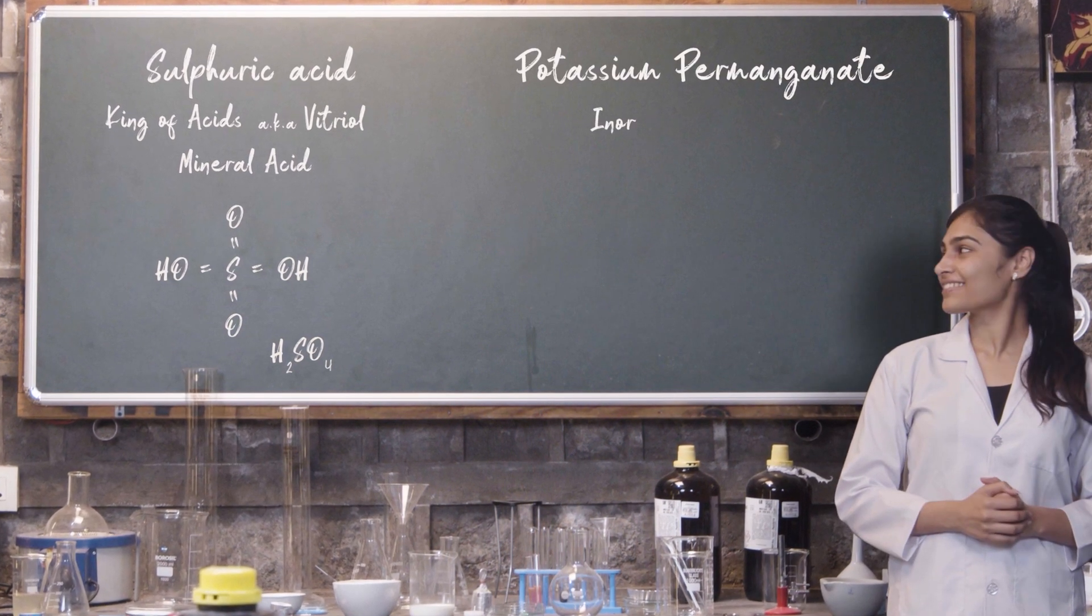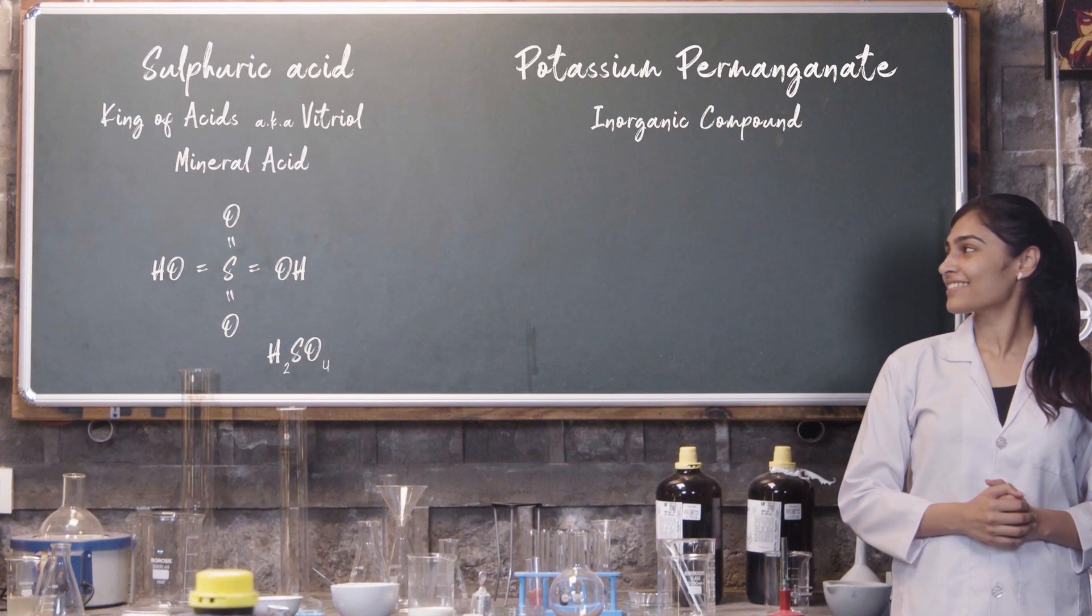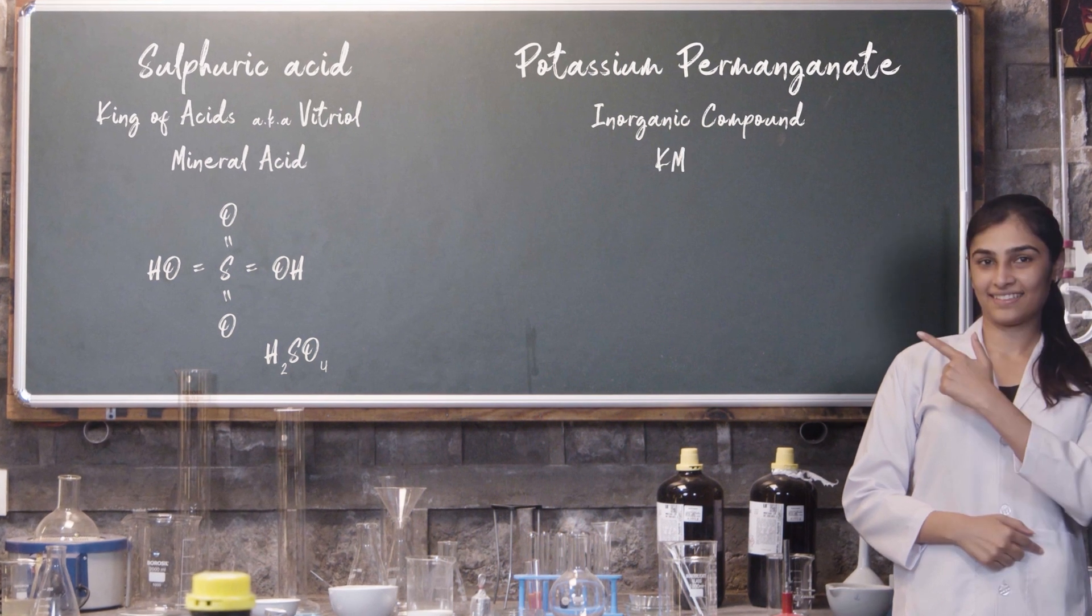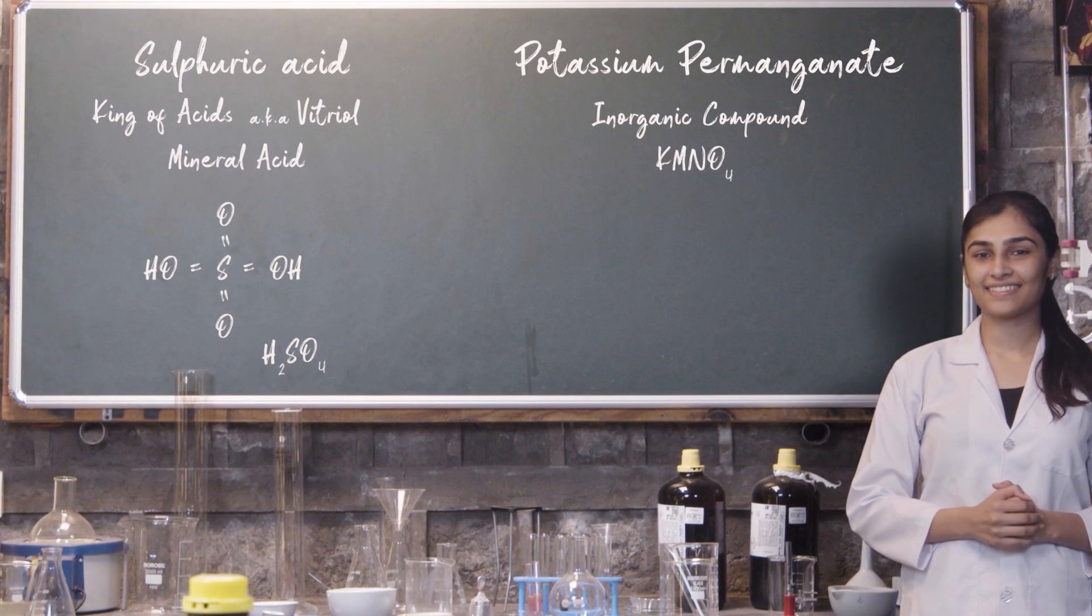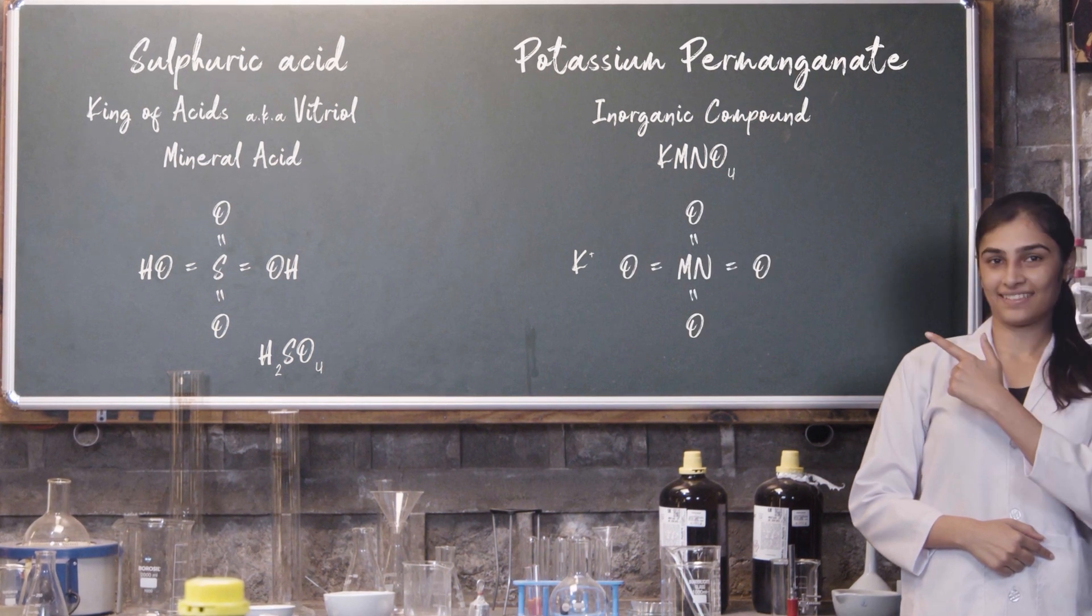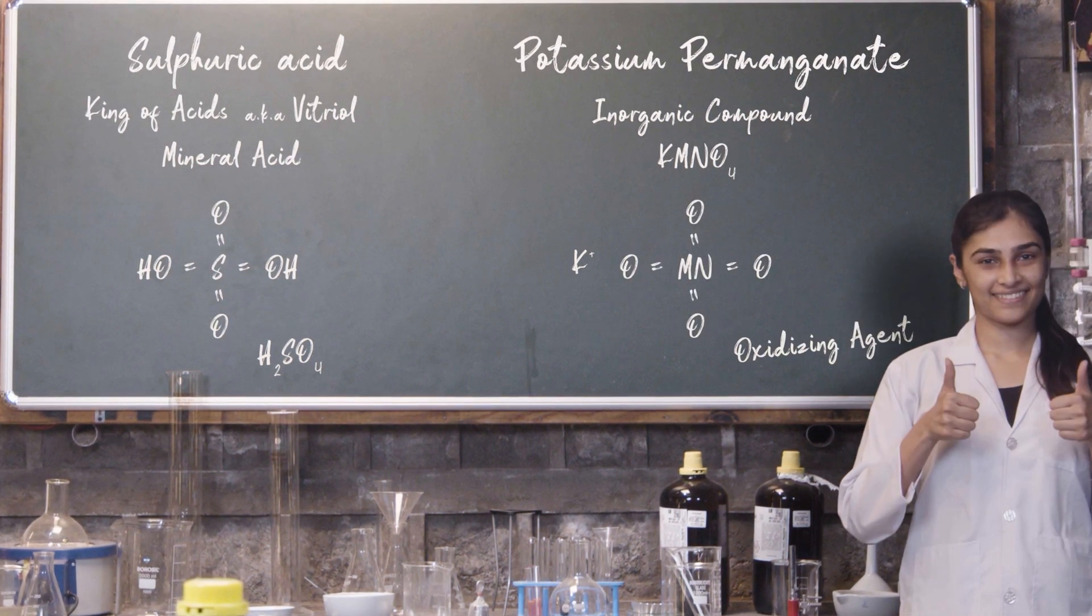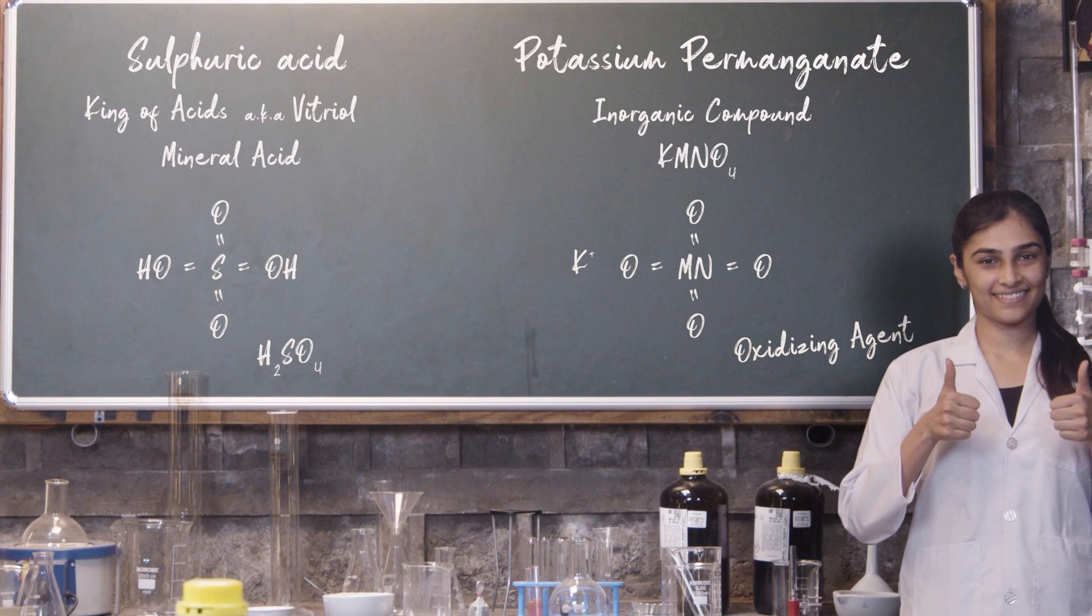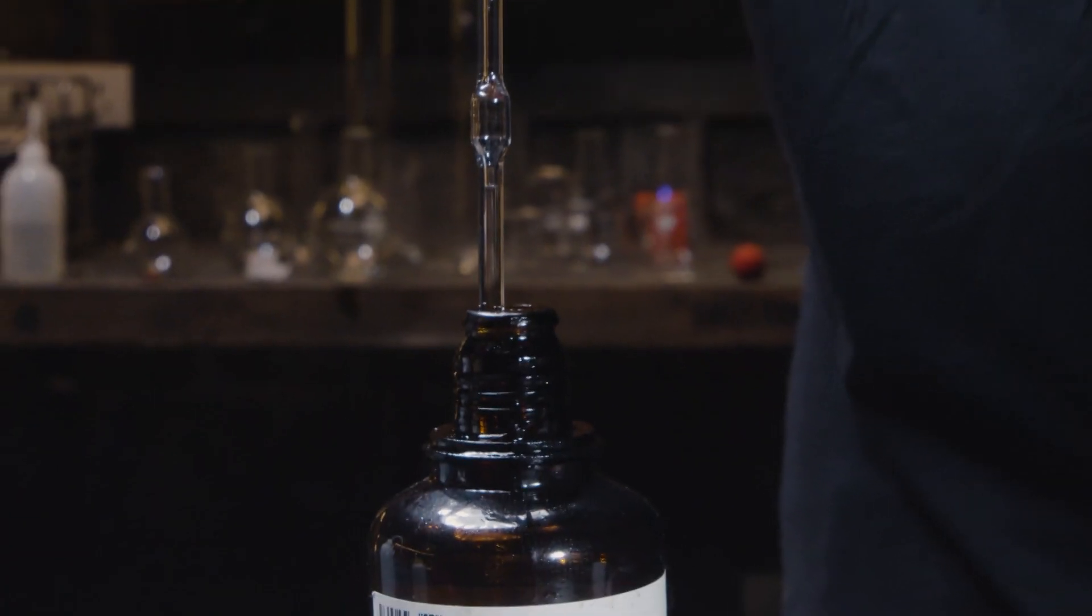Potassium permanganate is an inorganic compound and its chemical formula is KMNO4. This is a salt that is made of K plus and MnO4 minus ions. This is a really good oxidizing agent. So let's see how this whole thing turns out.